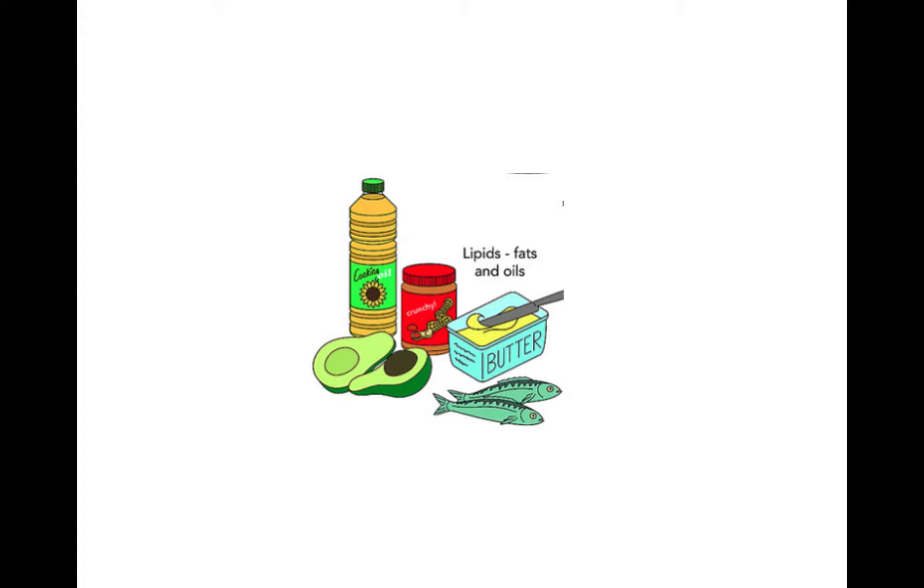So what does that look like in real life? Well, let's take a look. If you have a cooking vegetable oil, which we buy in a bottle, that's liquid form. Is that saturated or unsaturated? That's unsaturated because of those kinks. It's avocado oil. Avocado oil, if you've ever seen it in stores, it's liquid.